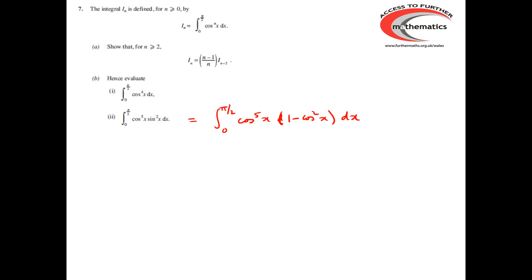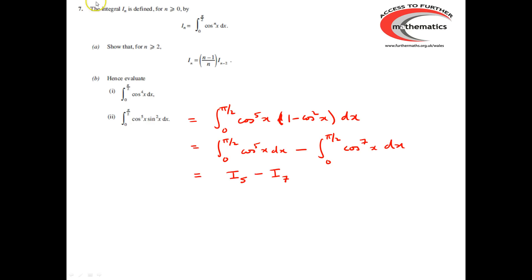For part 2, we've got the integral between 0 and π/2 of cos(x) to the power 5 times sin(x) to the power 2. Well, sin²(x) is the same thing as 1 minus cos²(x). So what we've got is the integral between 0 and π/2 of cos(x) to the power 5 times by 1 minus cos²(x), which is the integral of cos(x) to the power 5 take away the integral of cos(x) to the power 7 — in other words, I_5 take away I_7. Using the formula with n equals 7, I_7 is 6 over 7 times I_5. So we've got I_5 take away 6 sevenths of I_5, which is 1 seventh of I_5.